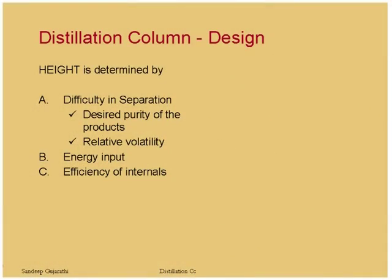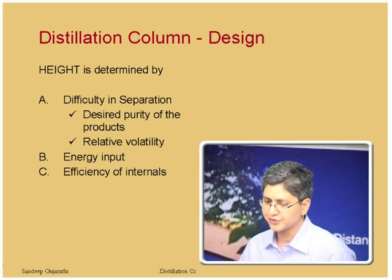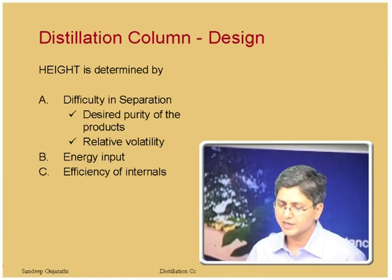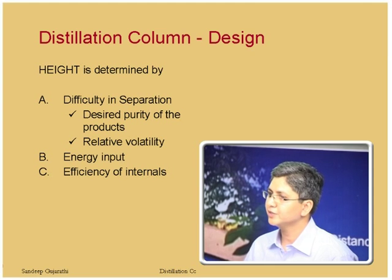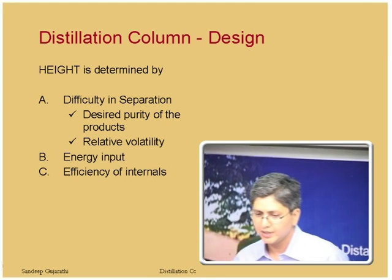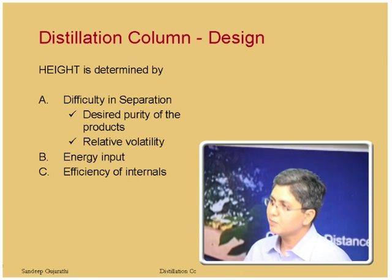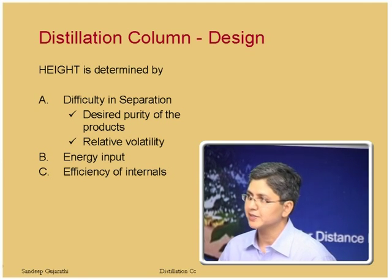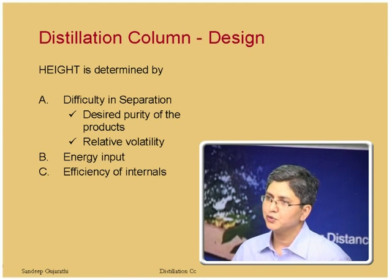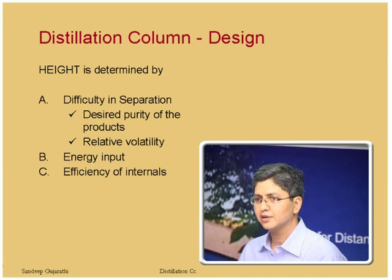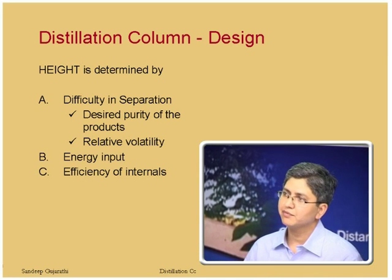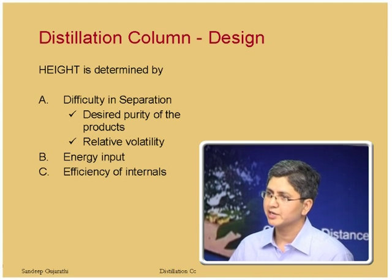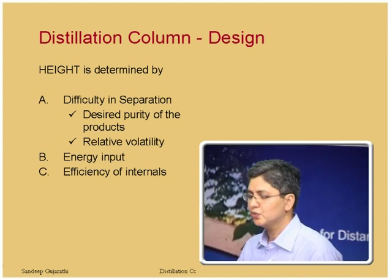The height of the column is determined by the difficulty of separation, which depends on the desired product purity and the relative volatility between the different components. Height is also determined by the amount of energy put into the column and the efficiency of the internals. If you design with very large heat input, column height reduces significantly because of the higher vapor generated, leading to higher vapor-liquid traffic and fewer required theoretical stages.